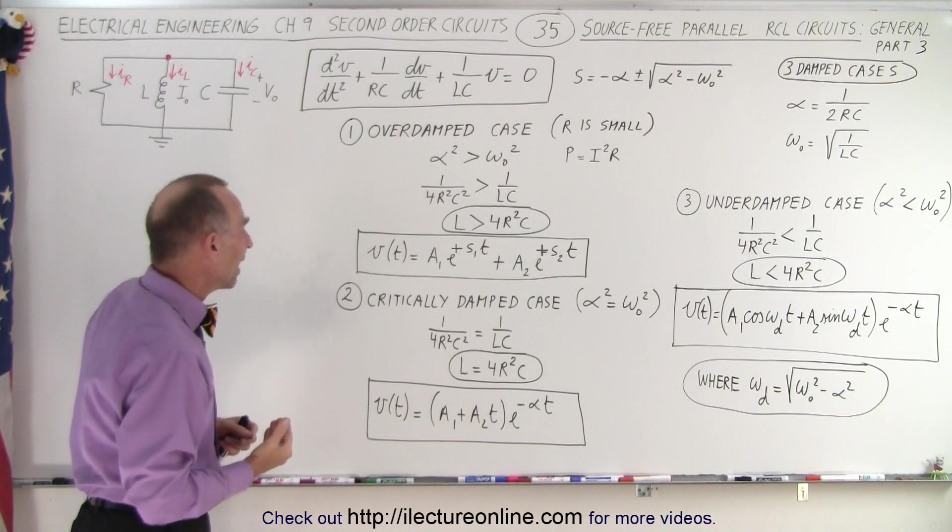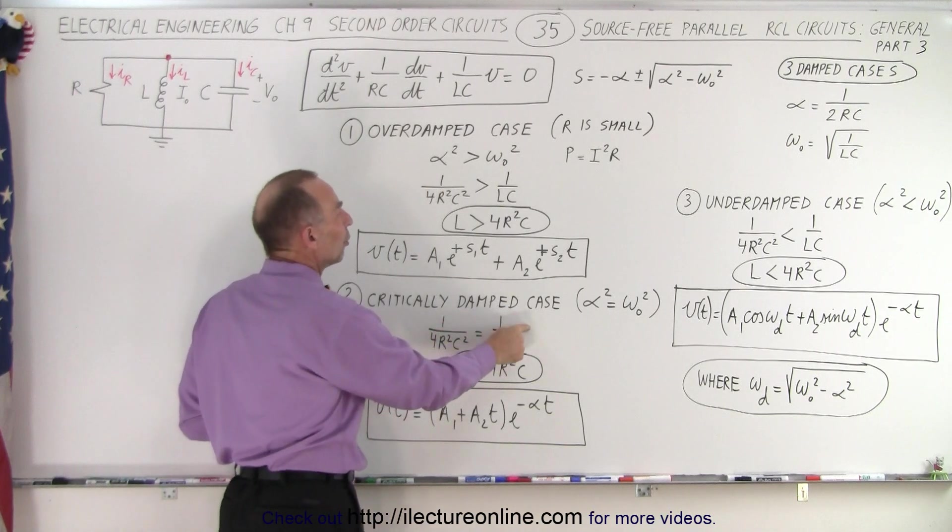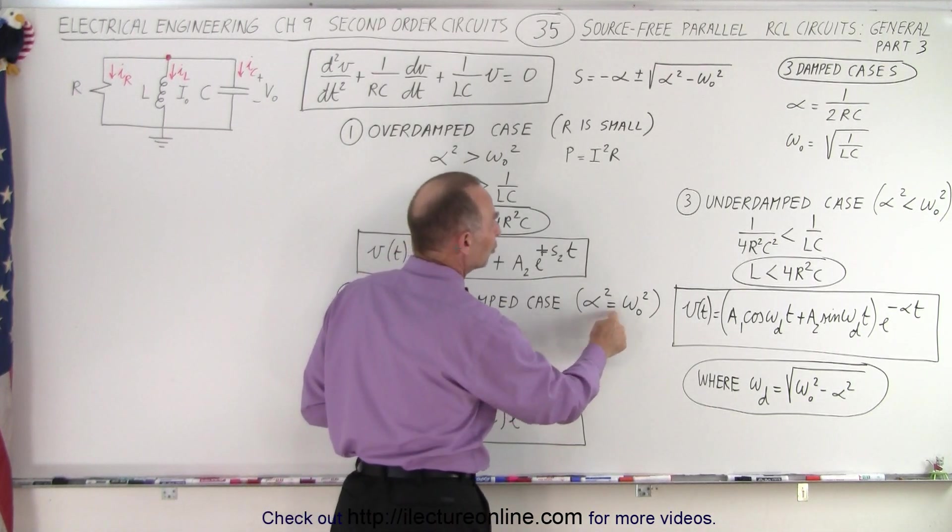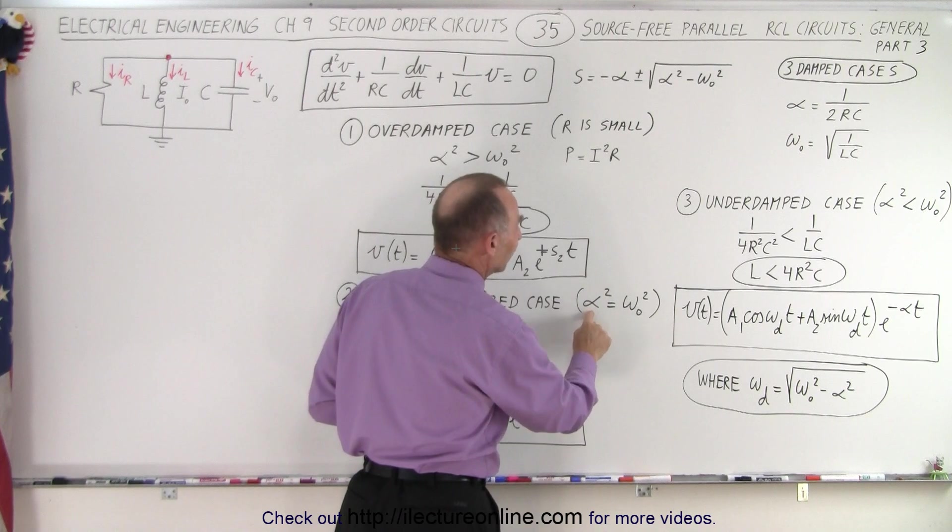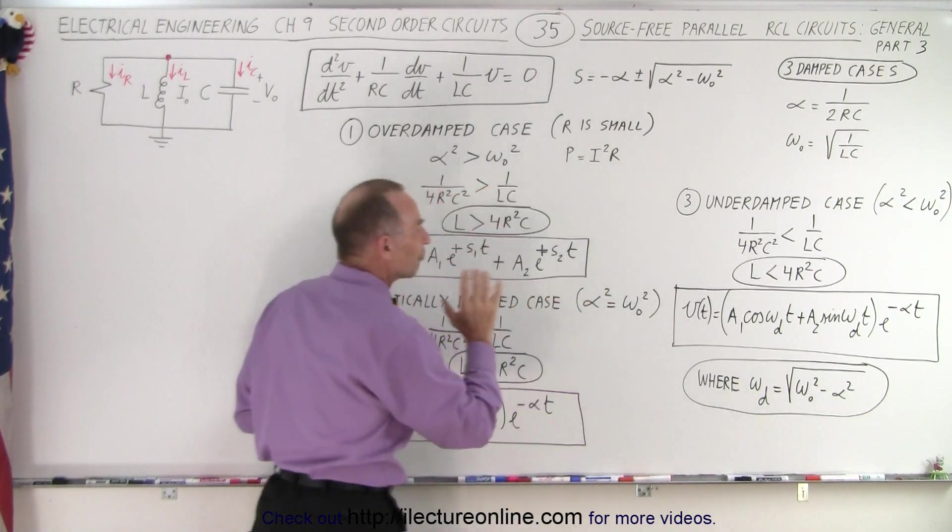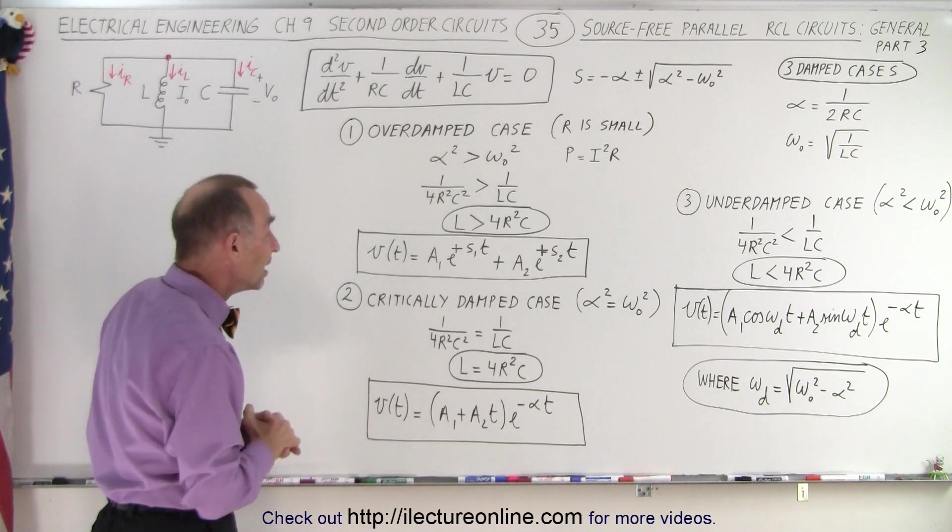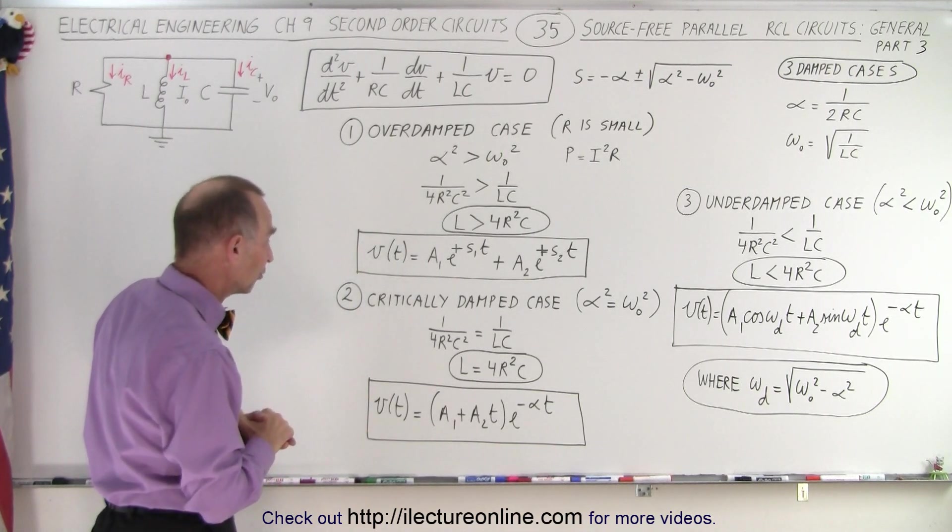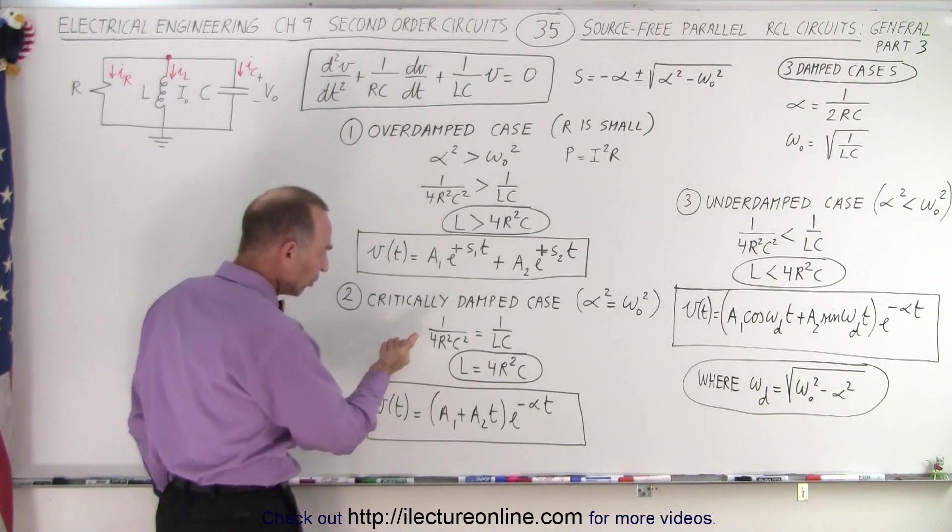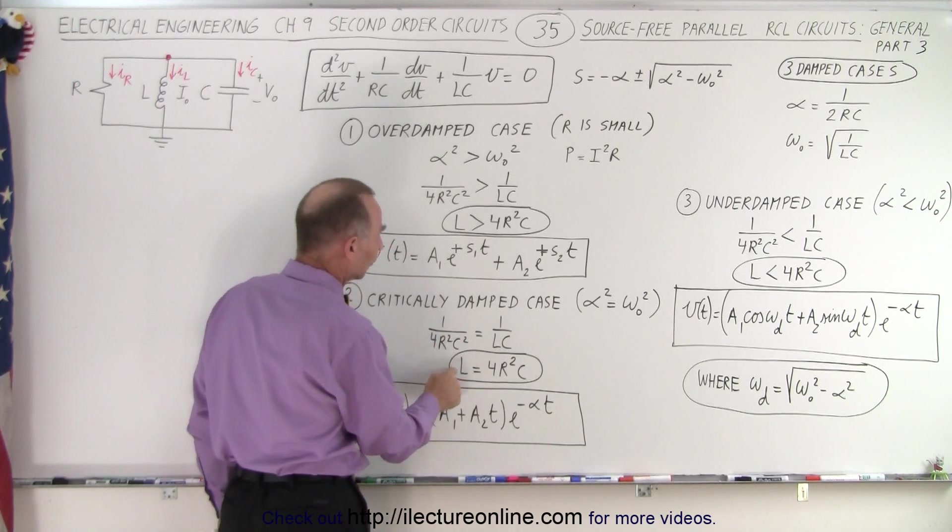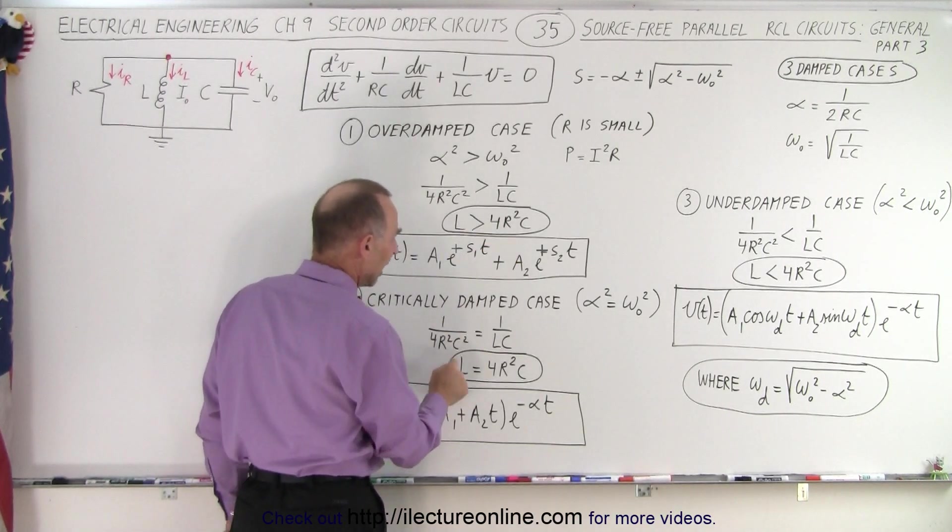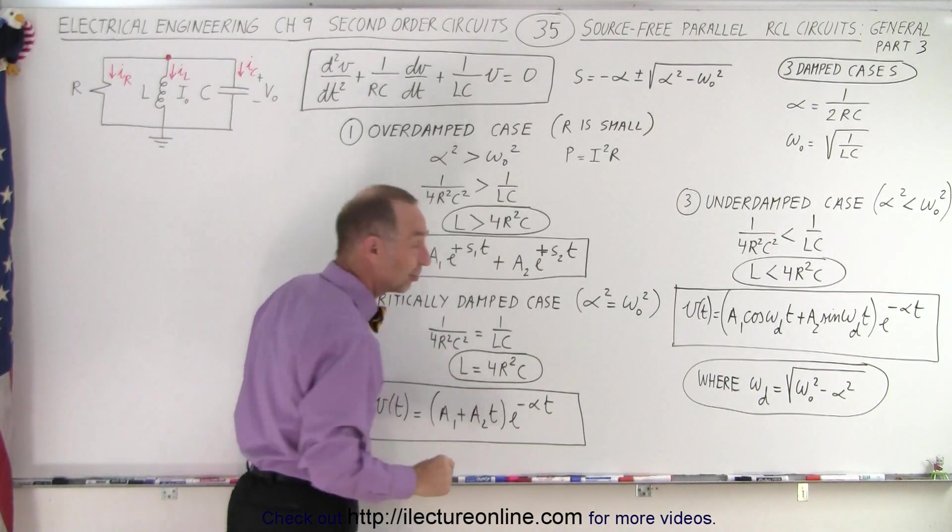The second case is where we have a critically damped case, where the alpha squared is exactly equal to the omega sub-naught squared. So that means that the alpha is equal to the natural frequency of the, essentially, of the circuit, the RCL circuit. So when we set the two equal to each other, now we realize of course that L, instead of being larger than 4R squared C, L is equal to 4R squared C.